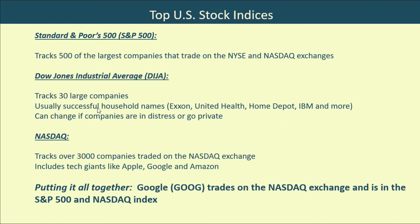The Dow Jones usually includes successful household names like Exxon, UnitedHealth, Home Depot, IBM, and more. These companies can interchange — if one goes into distress or goes private, it'll be replaced with another company. We hear a lot about the Dow and it's important, but the S&P 500 has more stocks in it, which is a big difference between the two.